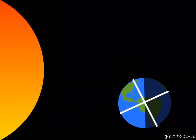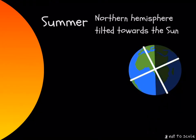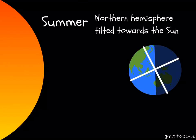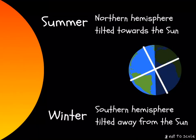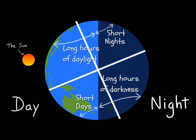When the northern hemisphere is tilted towards the Sun, it is in summer. Temperatures are warmer and there are very long hours of daylight and very few hours of darkness. The southern hemisphere is tilted away from the Sun, so it is in winter. Temperatures are colder and there are very long hours of darkness with very few hours of daylight.